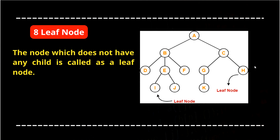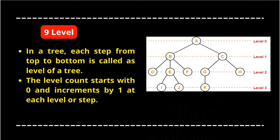The ninth terminology is level. In a tree, each step from the top to bottom is called a level of the tree. The level count starts with zero and increments by one at each level or each step. At node A the level is zero. Coming to the next step the level is one, then the next step is level two, and the final step is level three.